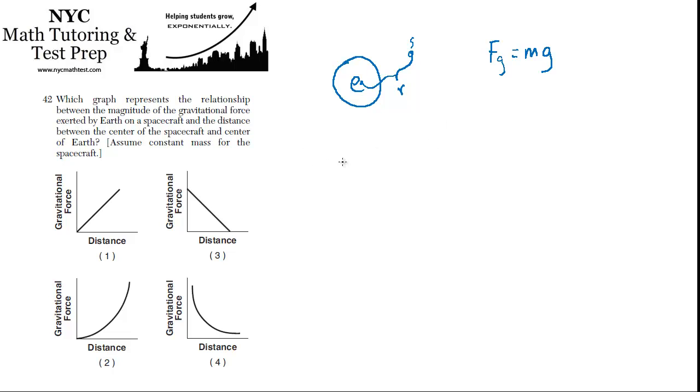we would say that Fg instead equals this universal gravitation constant times the mass of one of the objects times the mass of the other object. So maybe one of these is the spacecraft and the other is Earth. And that all gets divided by the distance squared. And this is really the relationship we want to focus on.